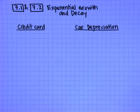So far in this chapter we've been talking about exponential growth and decay, and we've been looking at two problems. One was the credit card problem, and one was car depreciation.